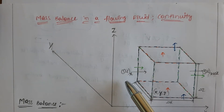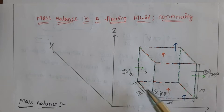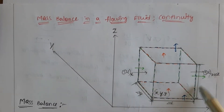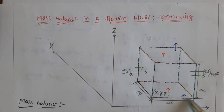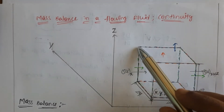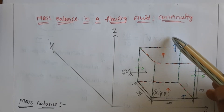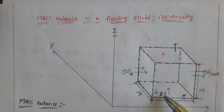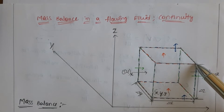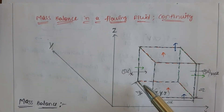Let's say the density of the fluid is rho. The mass flux of the fluid in the x direction at face x is represented by rho·u at x, and similarly at face x plus delta x it is rho·u at x plus delta x. In the y direction at face y it is rho·v at y, at face y plus delta y it is rho·v at y plus delta y. In the z direction at face z it is rho·w at z, and at face z plus delta z it is rho·w at z plus delta z.